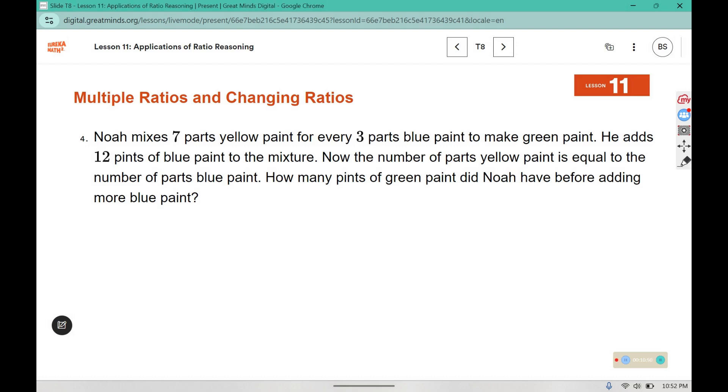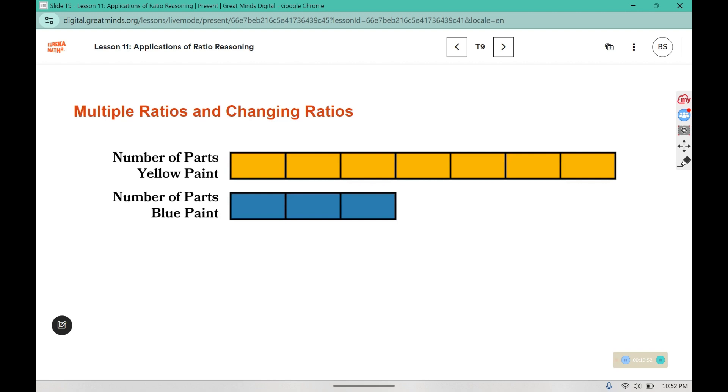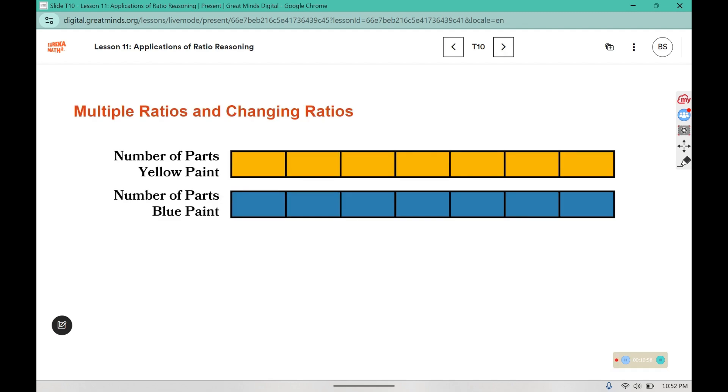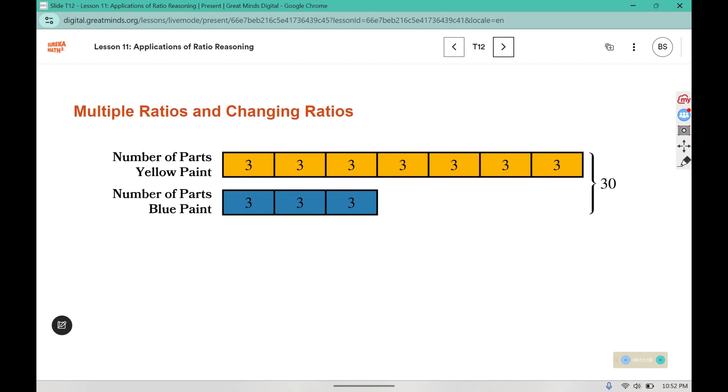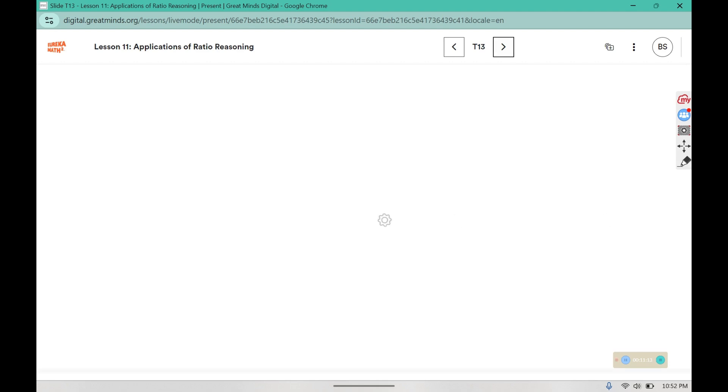Here we can see that we started with seven yellow and three blue. They added four more blue boxes to make them the same. Those four were made up by 12 pints, so three goes in each one for a total of 30 pints of green paint.